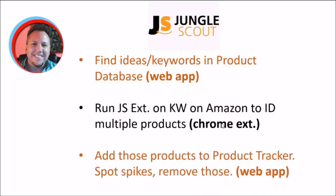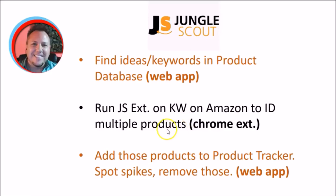Once you identify multiple products using the Chrome extension, you want to add those to the product tracker within the web app. This helps you spot spikes in these products so you can remove temporary trends. Once more: find ideas and keywords in the product database, run the Chrome extension on Amazon, then bring products into the product tracker to spot anomalies and remove them as needed.